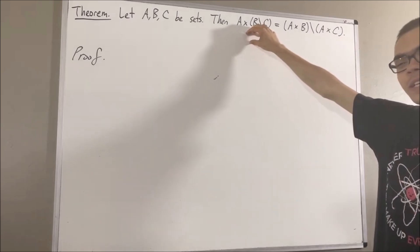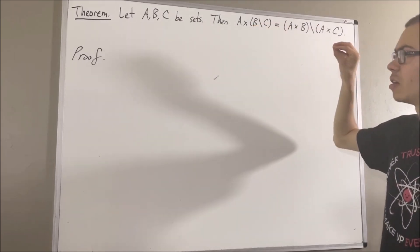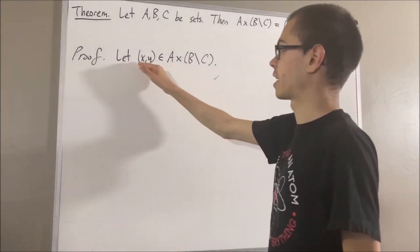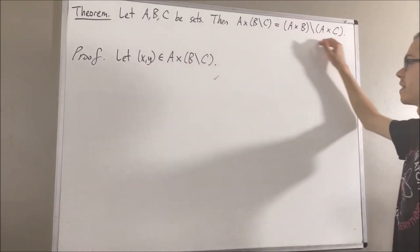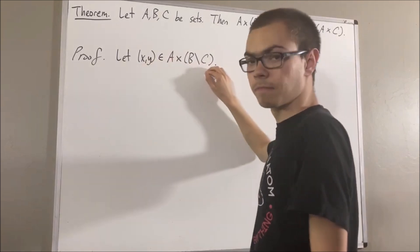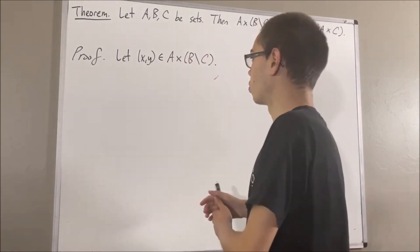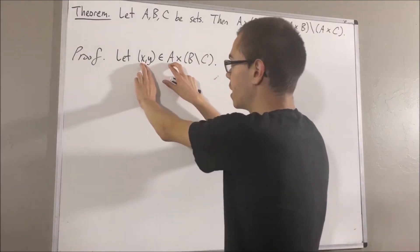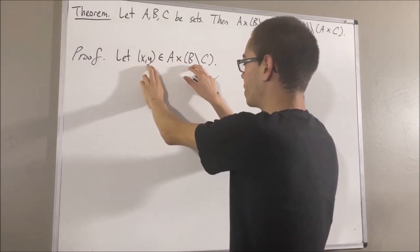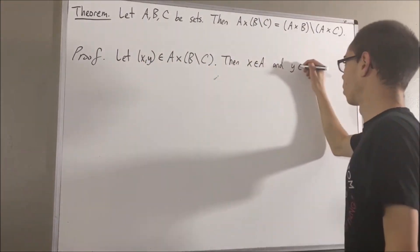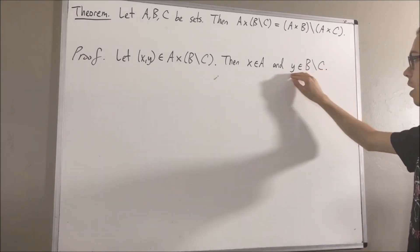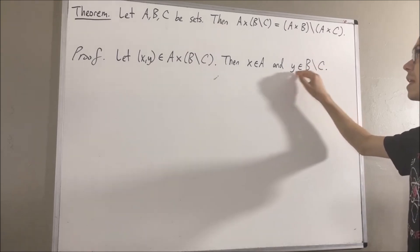So give me an arbitrary element of this set — I'll call it x comma y. Our whole goal from here is to show that x comma y lies in this set. What does it mean for x comma y to be an element of this set? Well, we're an element of a Cartesian product, so the first coordinate is an element of the first set and the second coordinate is an element of the second set. So x is an element of A, and y is an element of B set minus C. Since y is an element of B set minus C, this tells us that y is an element of B, and y is not an element of C.